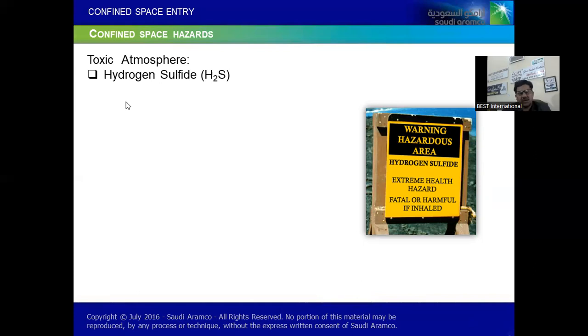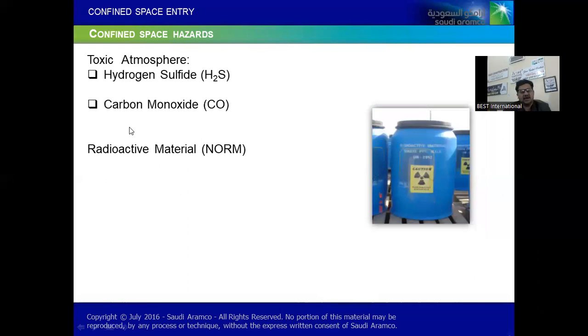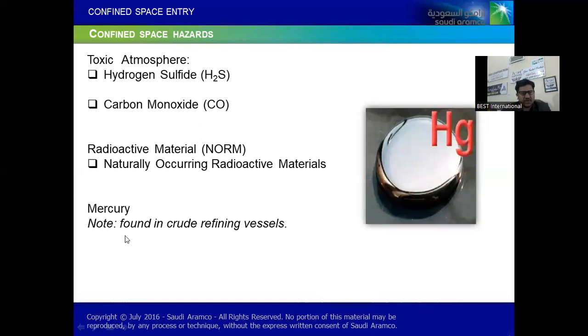But ultimately, some rules are very clear that every two hours you need to take gas testing, so you have to come out. Carbon monoxide - ideal again zero, but below 35 ppm we can work eight hours. But 35 to 1000 ppm we need SCUBA, we need some further precautions to be taken and approvals as well. And above 1000 ppm to onward, even no entry. Same way, the radioactive material, naturally occurring radioactive material I'm talking about, and mercury, especially found in crude refining vessels.